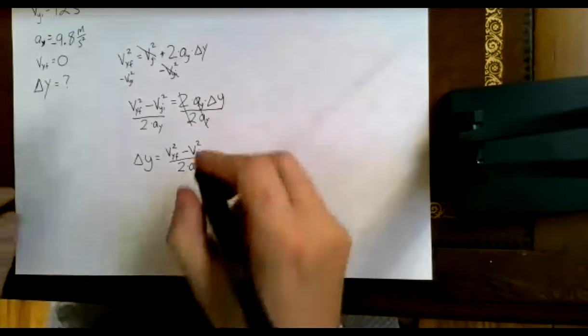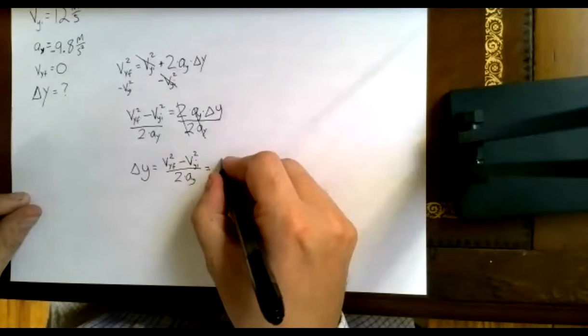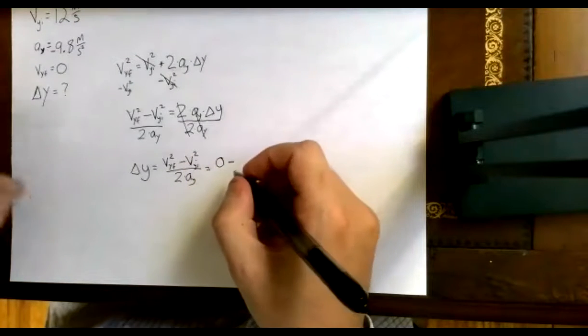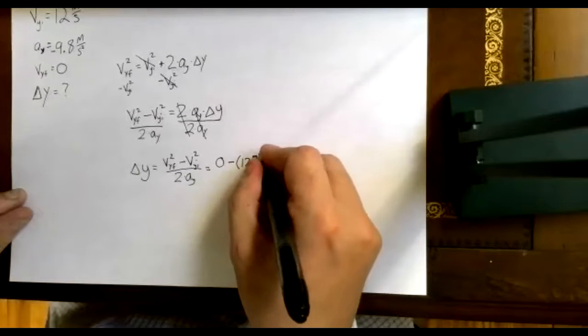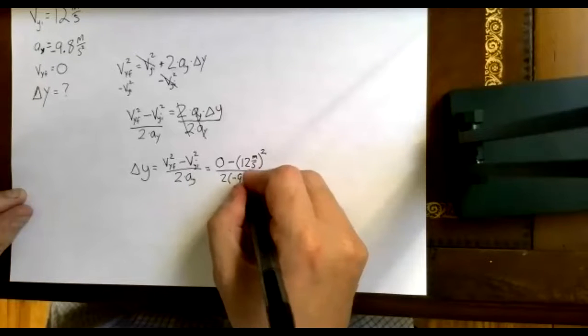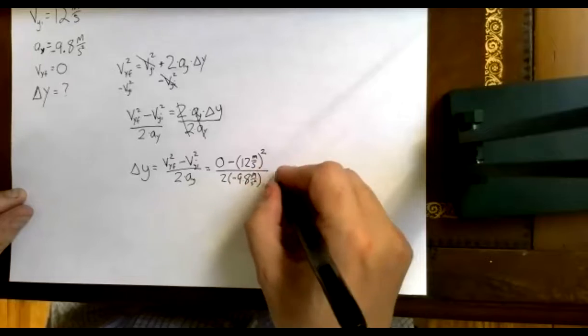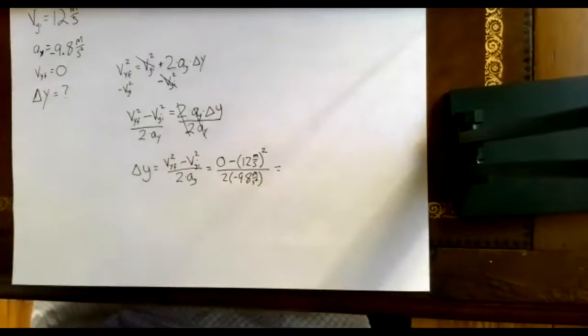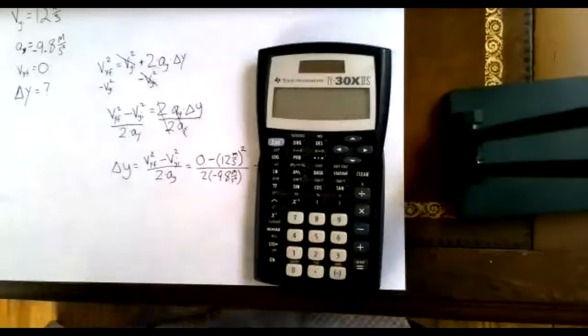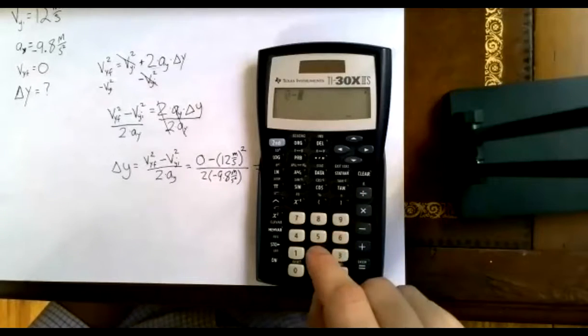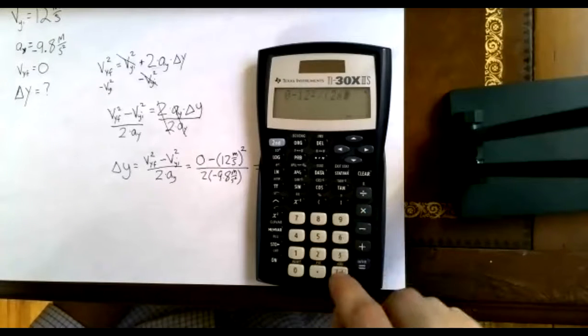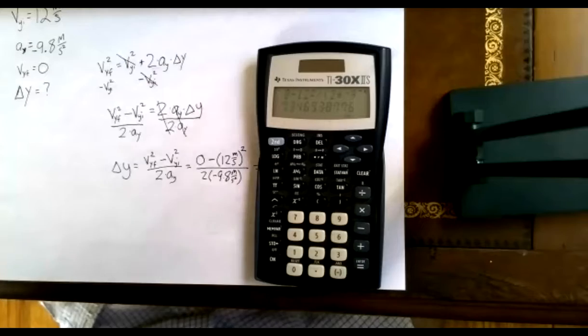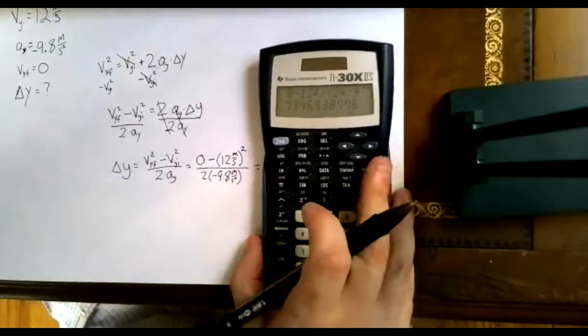Okay, now I can go ahead and plug in my numbers. My final velocity was zero. So zero squared is still zero minus my initial velocity squared. So that's 12 meters per second. I'll have to square that. Then divided by two times negative 9.8 meters per second squared. So let's see, I have a zero minus, and then I have 12 squared. And then I want to divide that by two times negative 9.8. And I get 7.346, so round that to 7.35.